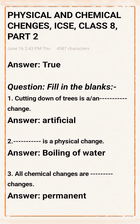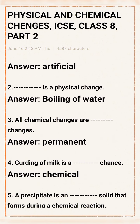Fill in the blanks, Question 1: Cutting down of a tree is a/an ___ change. Answer: Artificial change. Question 2: ___ is a physical change. Answer: Boiling of water. Question 3: All chemical changes are ___ changes. Answer: Permanent change.